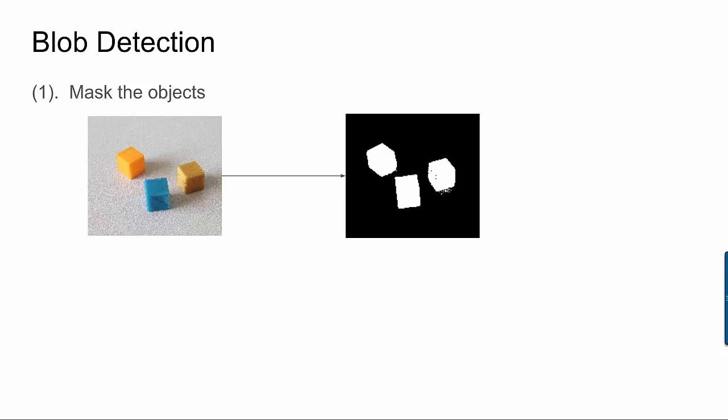In the last video, you learned a couple of very simple techniques for trying to isolate objects by masking them. So we're going to be starting from a black and white image where hopefully the things we care about are white pixels and the background will be black pixels. And to a human, we can see that there are three blobs here, no problem.